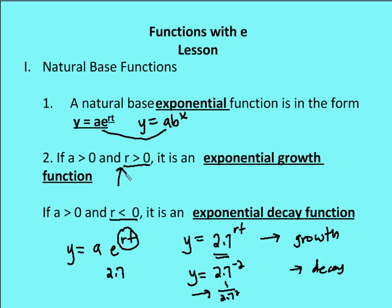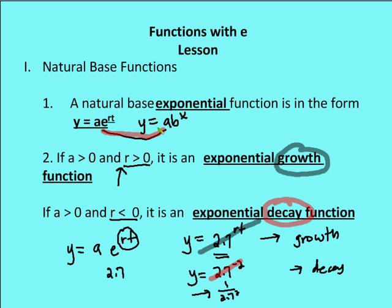What changes the function to either growth or decay is the value of R. If R is greater than 0, we leave 2.7 as is — a value greater than 1 — and we have a growth function. If R is negative, we create a fraction, 1 over 2.7 squared, which is between 0 and 1, and now we have a decay function. So these two very similar equations differ in that R defines whether the natural base exponential function represents growth or decay.